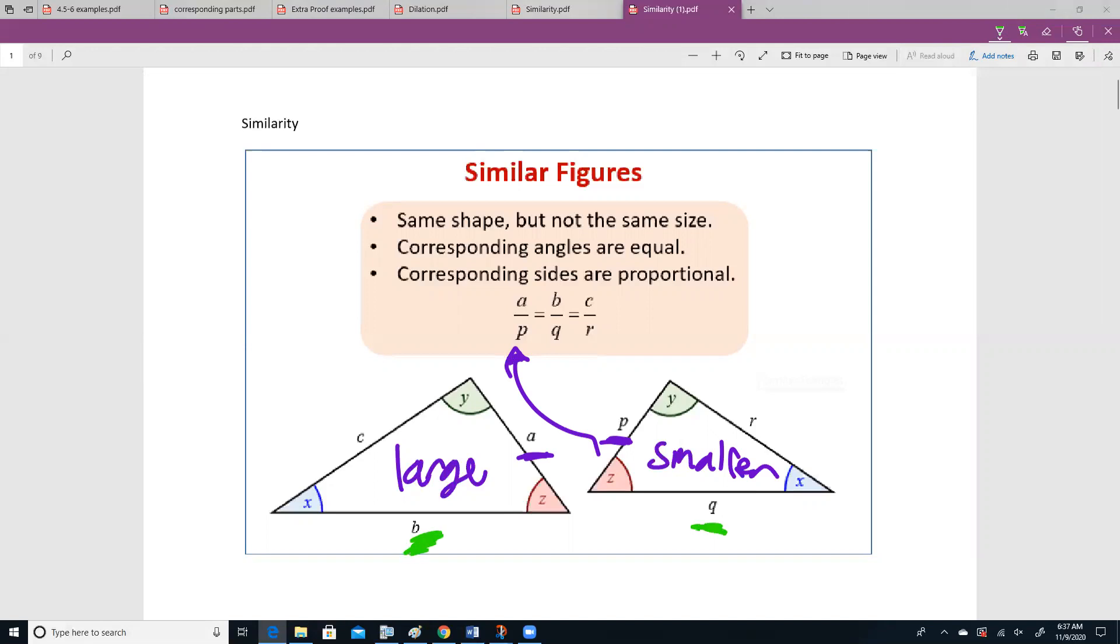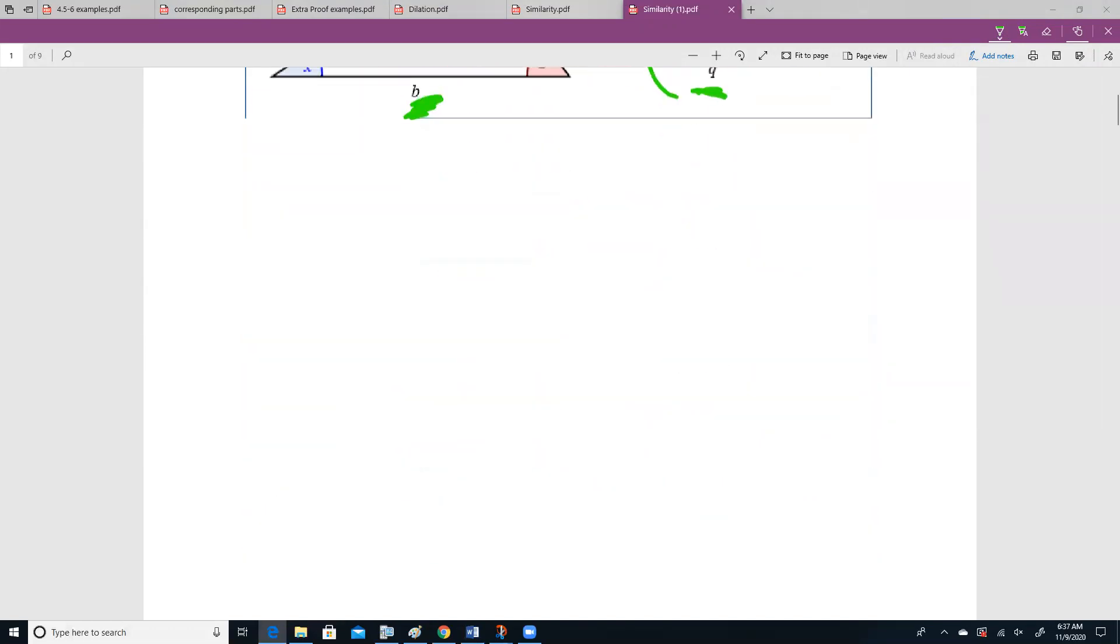Like b and q, if I put those together, if I divide them, they're going to give you the same thing as if I divided a and p, and the same thing would happen with c and r. Those fractions are actually going to become exceptionally useful.